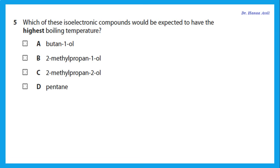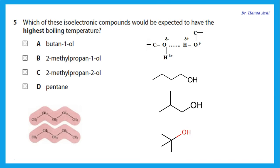Which isoelectronic compound has the highest boiling temperature? Anything with an OH group — an alcohol — would have a higher boiling point than something without one, because hydrogen bonding between molecules is stronger than London dispersion forces in alkanes. So anything with an OH has a higher boiling point than pentane. Among the alcohols, a straight-chain compound would have a higher boiling temperature than a branched-chain one.